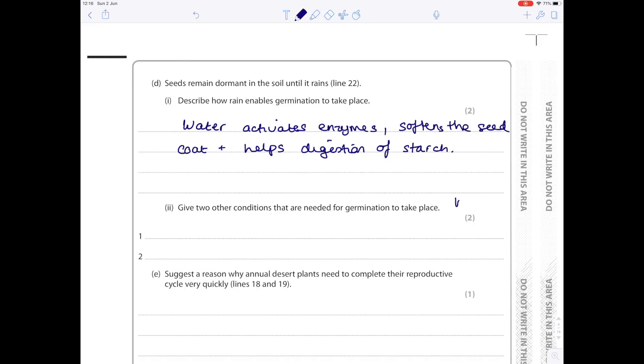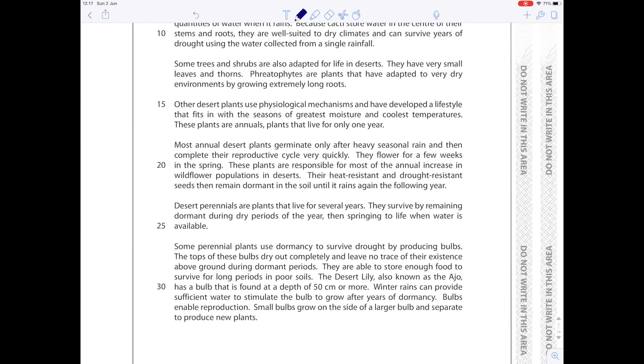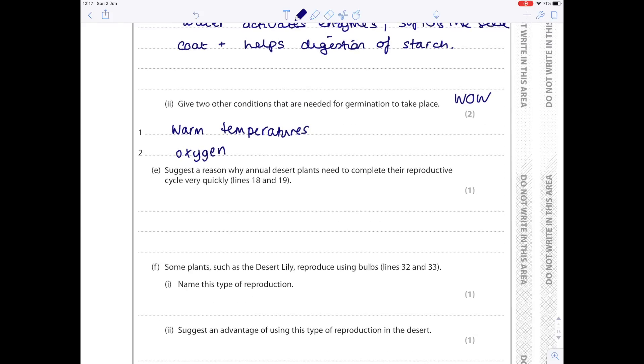Give two other conditions that are needed for germination to take place. Remember, I used the mnemonic WOW, which stands for warmth, oxygen, and water. So we know they've mentioned water, so please don't write that again. They won't award you marks for that. You're going to say warm temperatures and oxygen. Suggest a reason why annual desert plants need to complete their reproductive cycle very quickly, lines 18 and 19. Most annual desert plants germinate only after heavy seasonal rain and then complete their reproductive cycle very quickly. The obvious answer here is that the water needed for germination is only available for a very short amount of time.